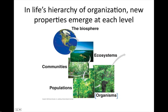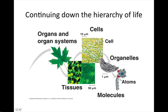An individual within a population is an organism. Continuing down the hierarchy of life, an organism is composed of organ systems. These systems provide a great variety of functions — some are used to rid our bodies of toxins, others help the body acquire energy from the food eaten.